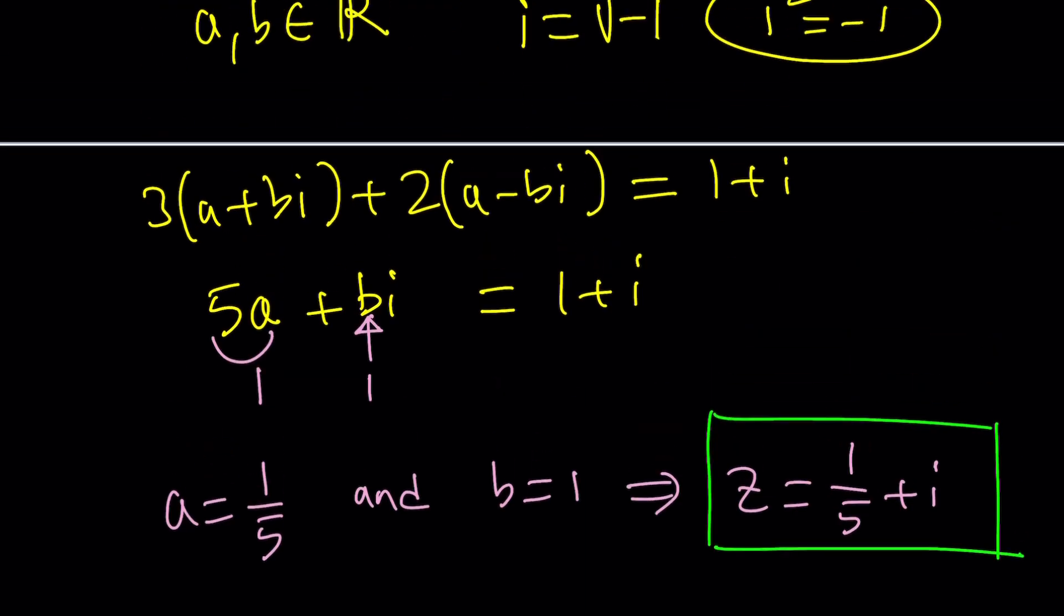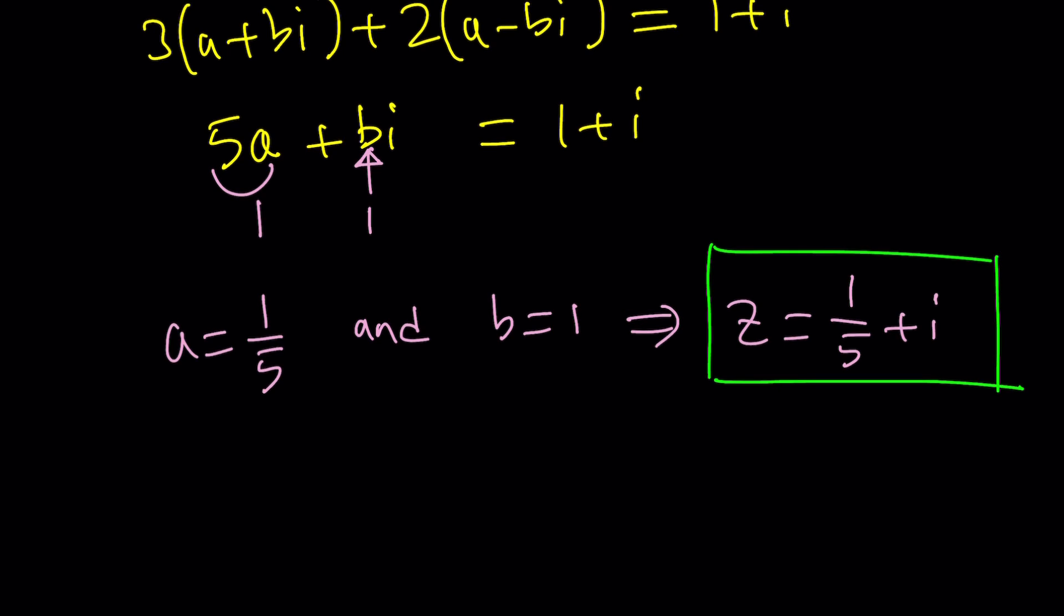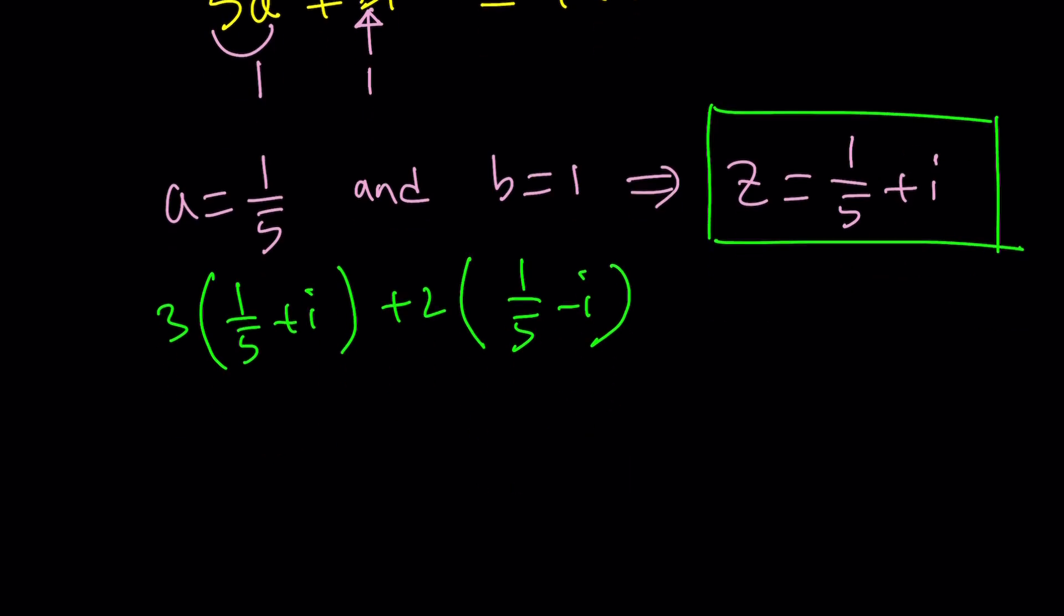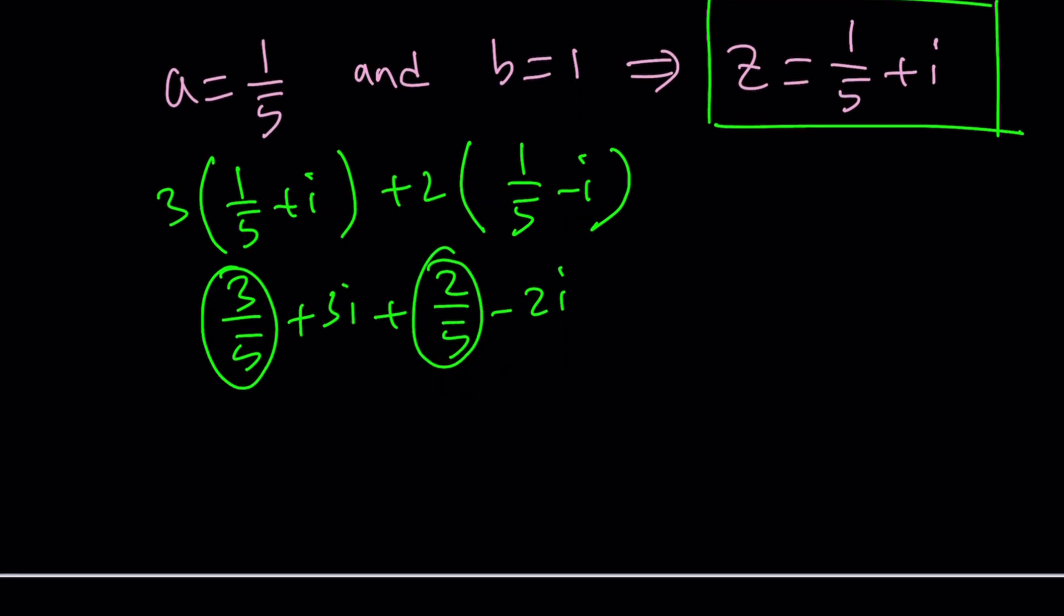If you wanted to check your work, you could definitely do that. 3 times z plus 2 times z̄: 3/5 + 3i plus 2/5 - 2i, this will give us 5/5, which is 1, plus 1i, so the answer is satisfied. We verified z is indeed a solution. How many solutions are there? Only one, because this equation is kind of linear.